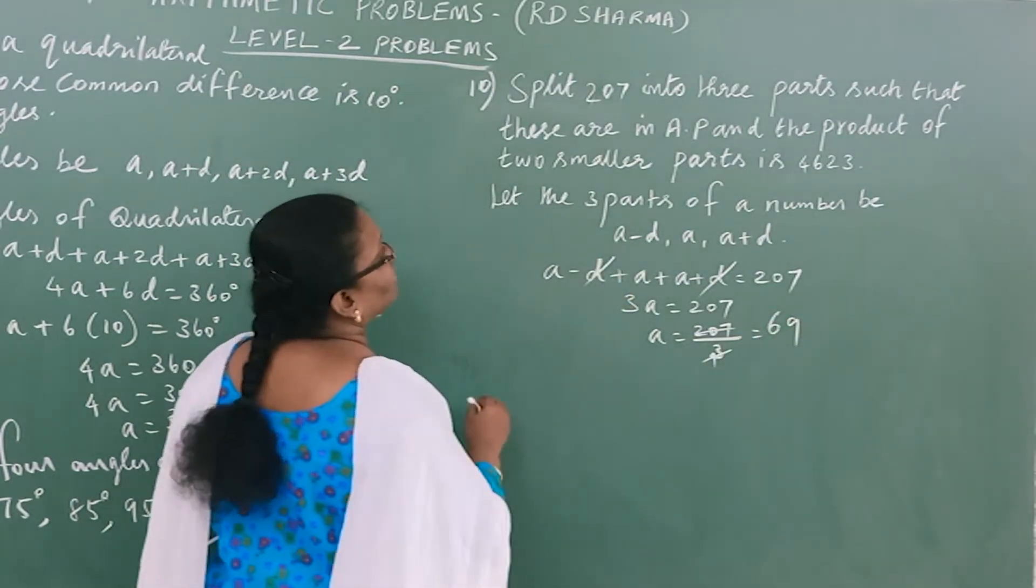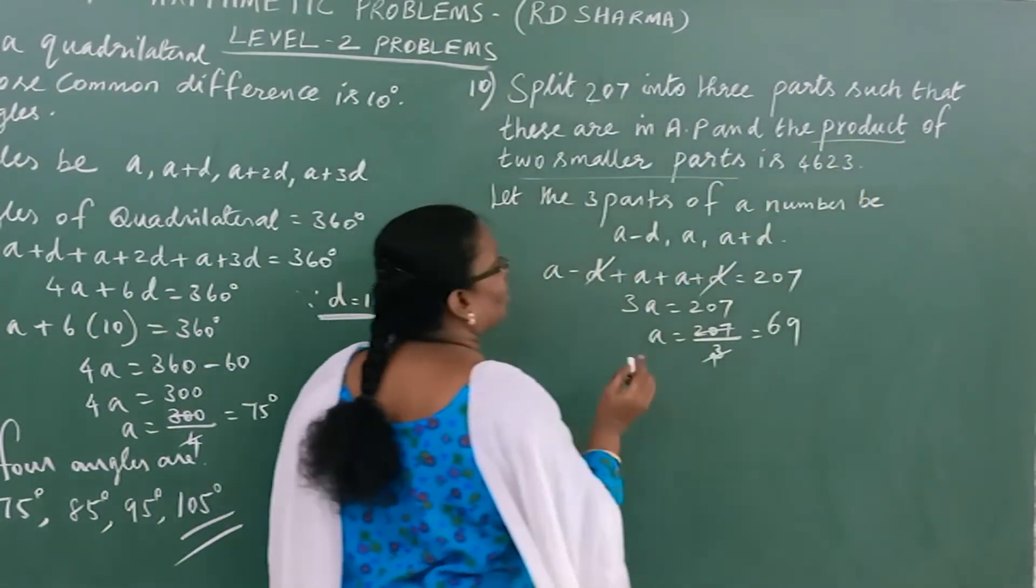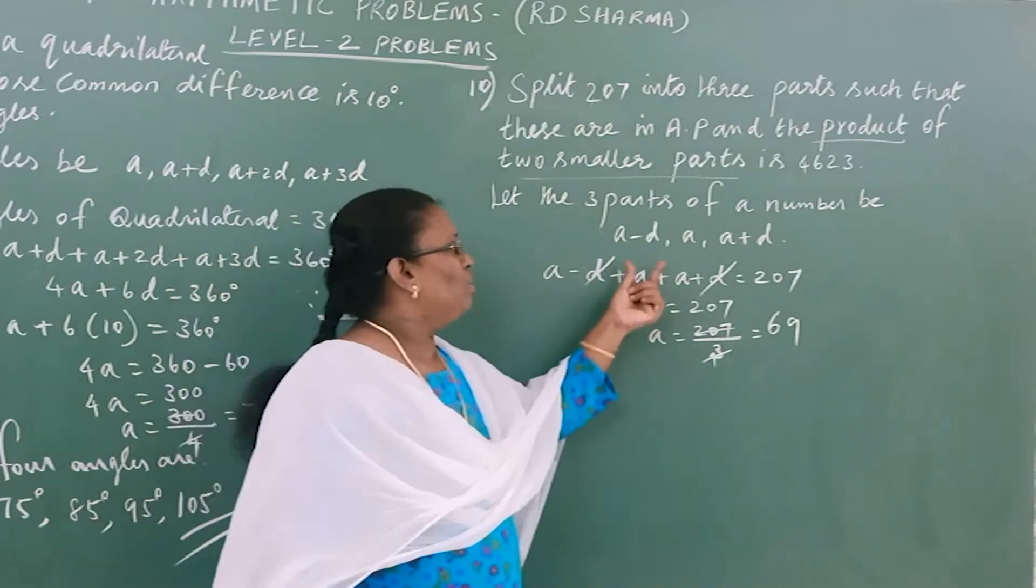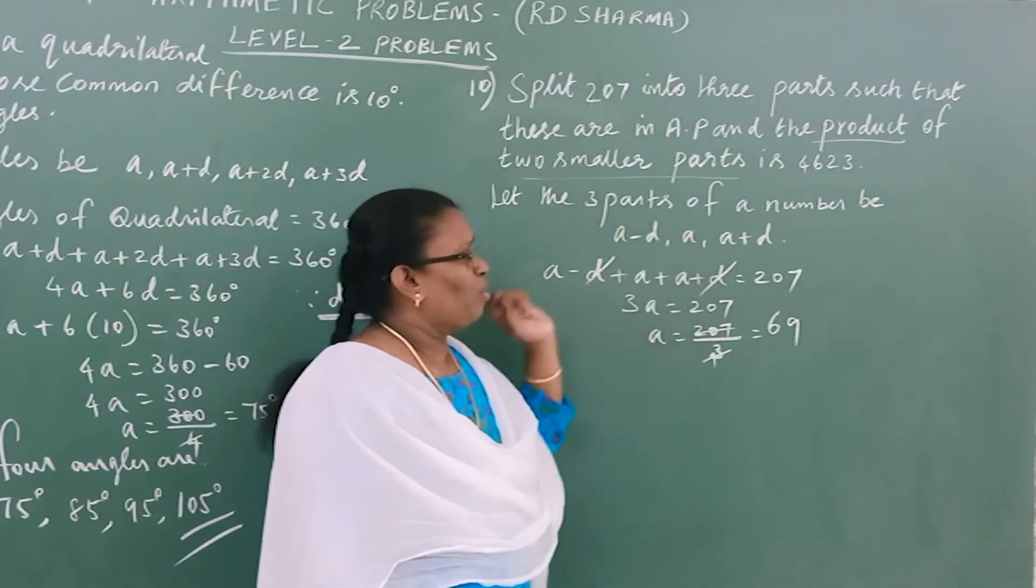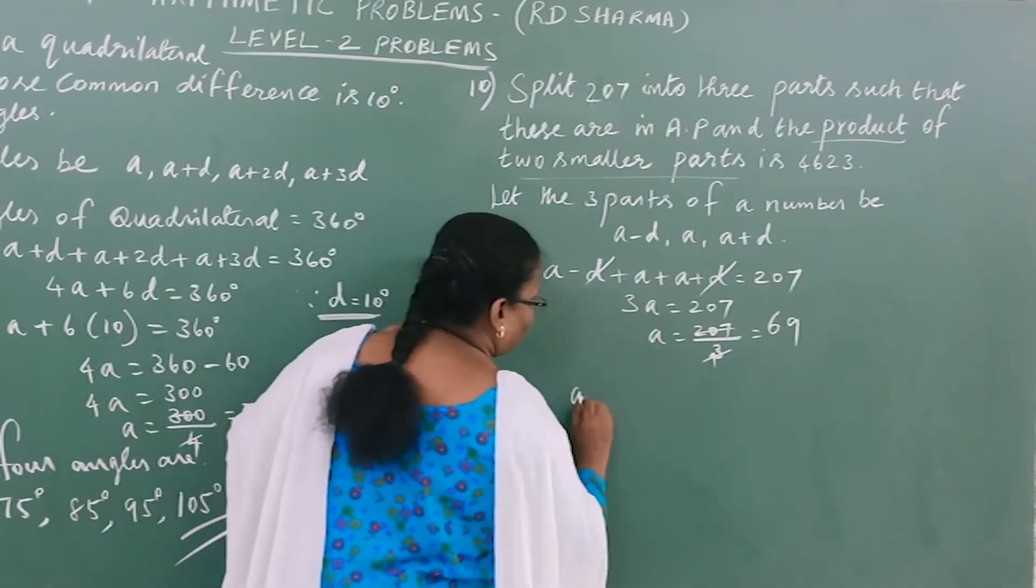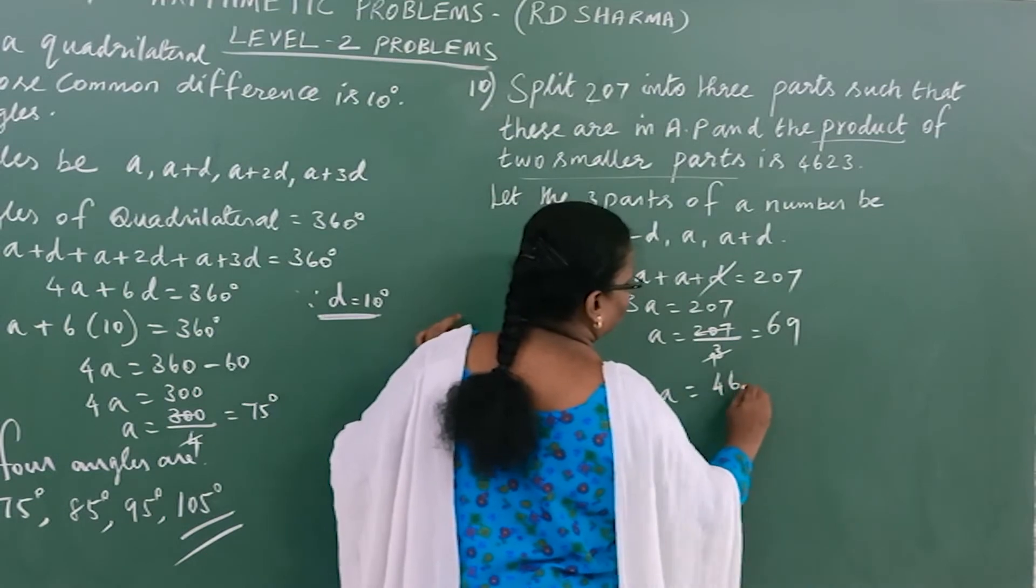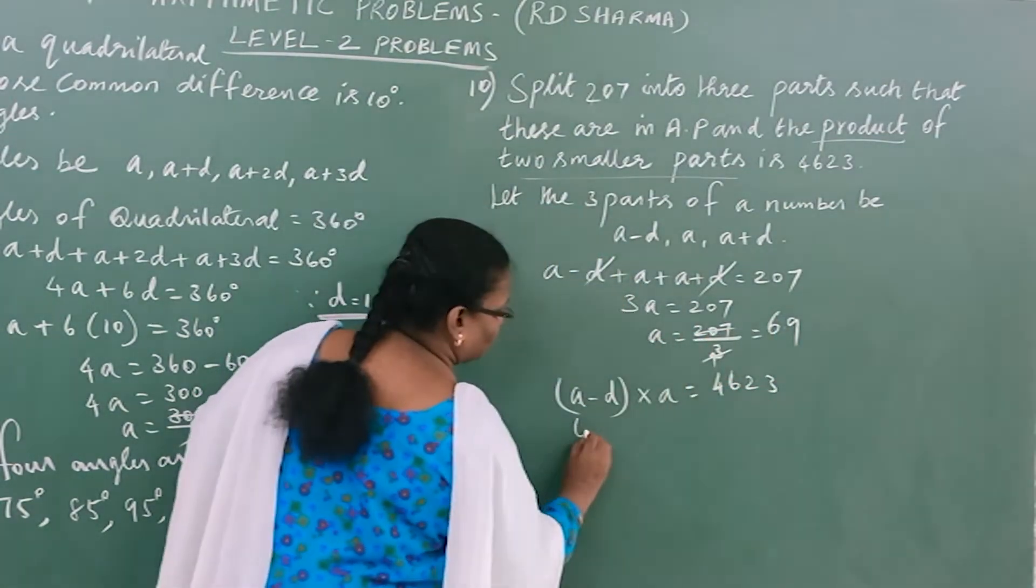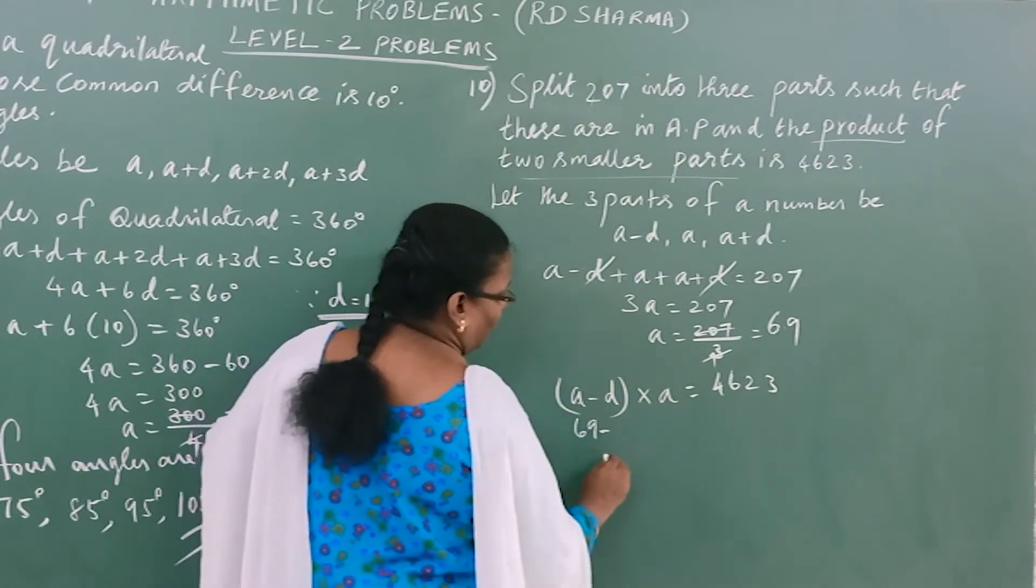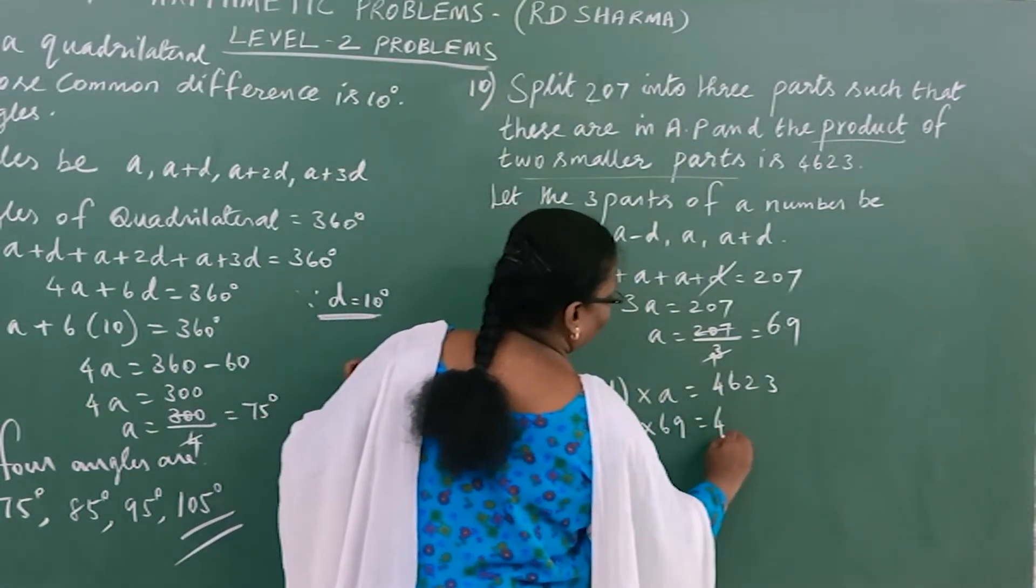Next, the product of two smaller parts: A-D and A are the smaller parts. So (A-D)×A = 4623. Where A = 69, substitute: (69-D)×69 = 4623.